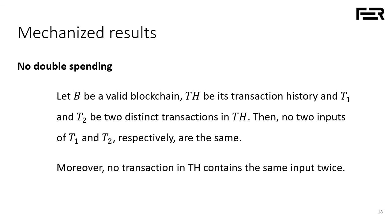Now I'll go over the main results — noting that we also defined many helper data structures and proved various helper lemmas and theorems. The first theorem we prove in a machine-verified fashion is the no-double-spending theorem. If we take a valid blockchain according to our definition and look at its transaction history, there is no double-spending: no transaction spends the same coin in its inputs, and if we look at any two different transactions T1 and T2, their inputs never spend the same coin.